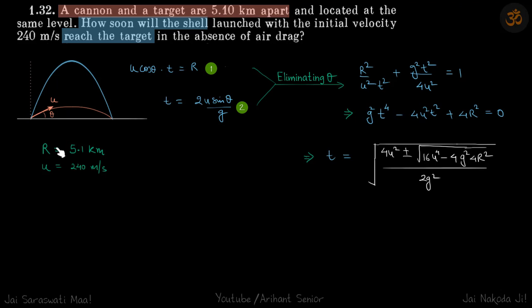So let's write for range first. Range is U cos theta into T. We are assuming the value of theta and we will need to get rid of it later. For now just let's write U cos theta into T is equal to R.